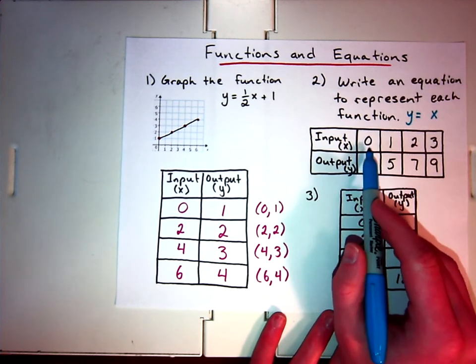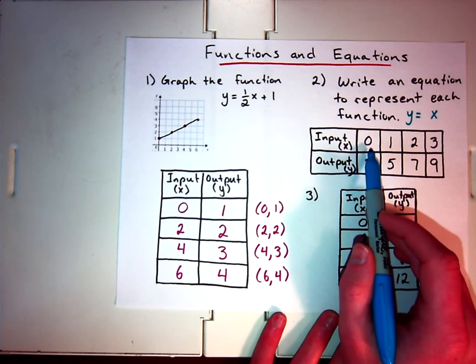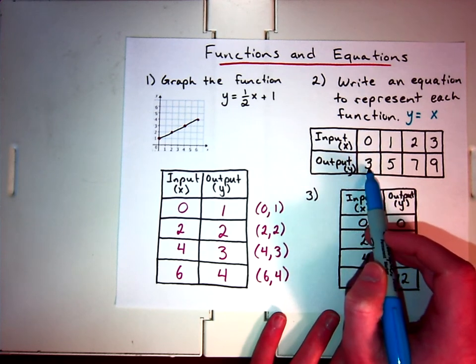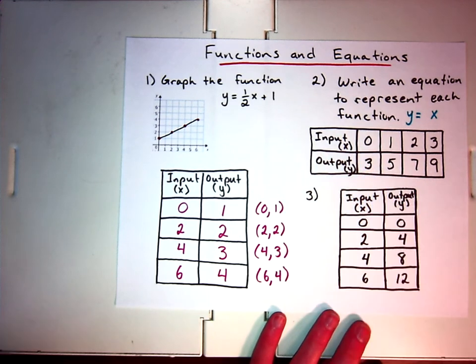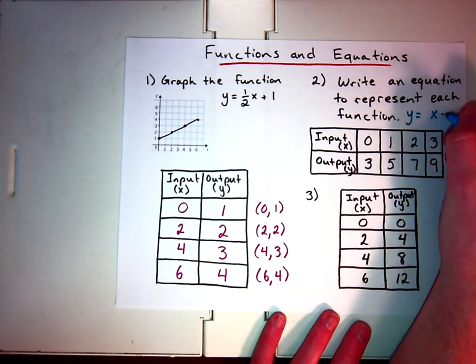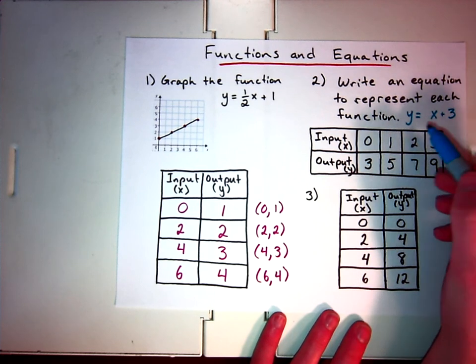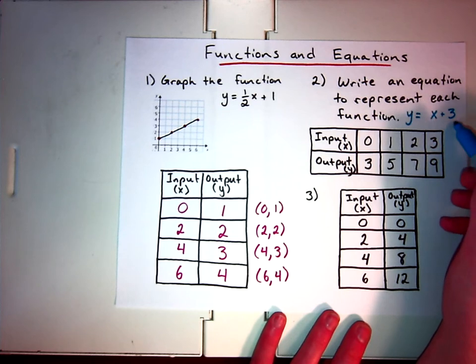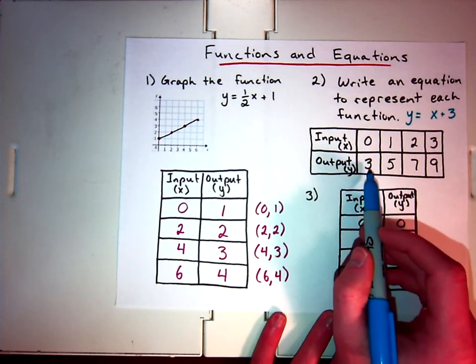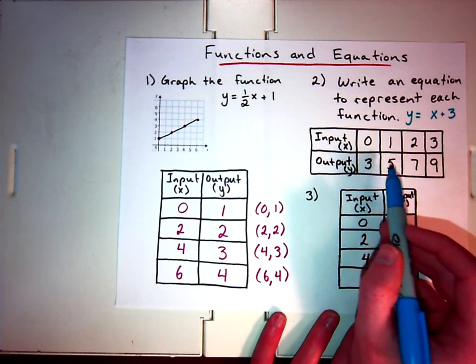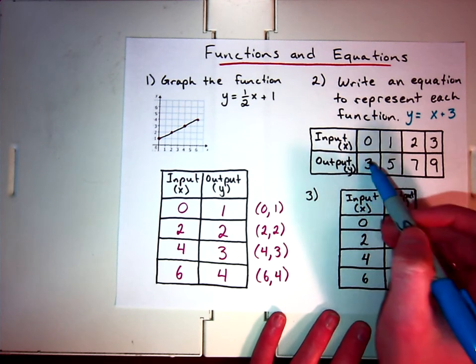Well, looking at this, if I plugged in 0 for x, my output would be 3. So that's going to give me a hint that I have to add 3 to this problem because if this right here is going to be 0, that 3 has to come from somewhere. So we're going to add 3 to it.